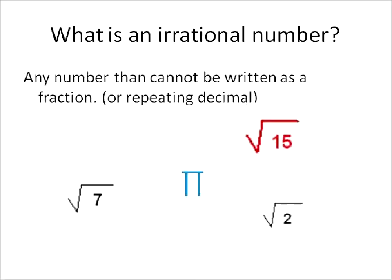What irrational numbers are, are any number that cannot be written as a fraction or a repeating decimal. For example, the square root of 2, the square root of 15, the square root of 7, these are all numbers that are just kind of repeating, but not in a set pattern. Pi is another one, 3.1415. And it continues on, but it doesn't really have a pattern. So it can't be written in a repeating decimal or in a fraction. Basically, if you can't write it in a fraction, it is an irrational number.